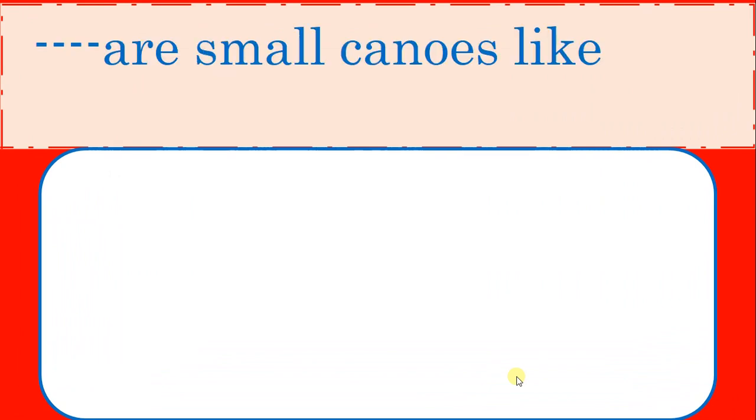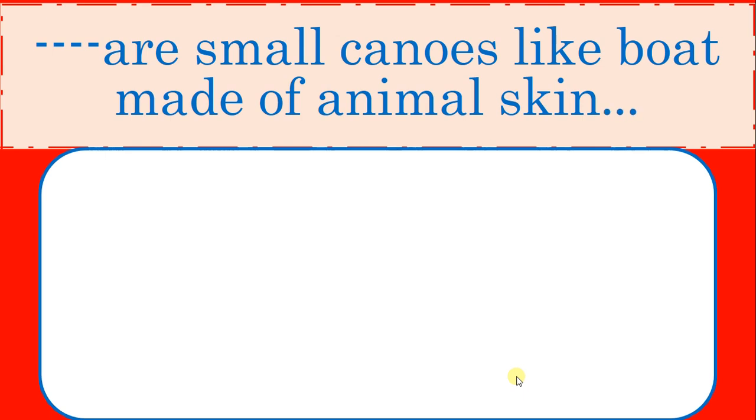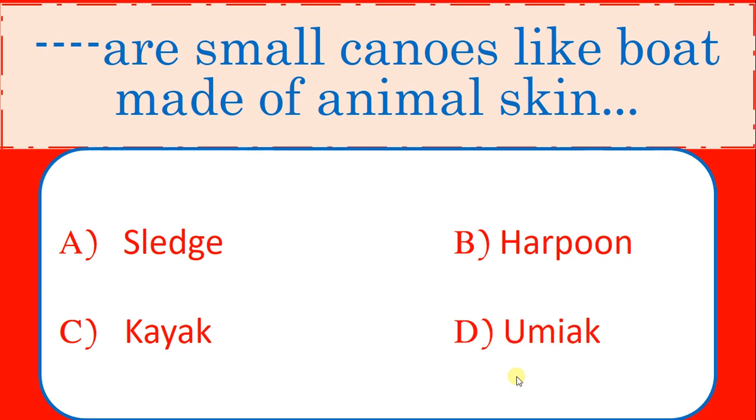Dash or small canoes like a boat made of animal skin. Options: Sledge, Harpoon, Kayak, Umiyak. Correct answer: Kayak.